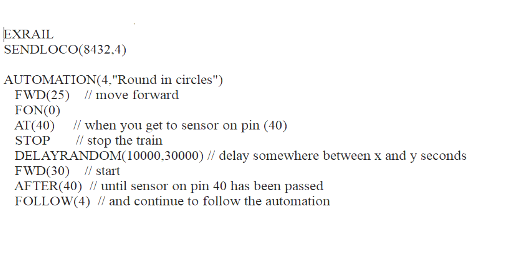The first line tells EX-Rail that commands are following. The next line, SENDLOCO, takes two parameters: the loco number and the sequence you want. Here I'm using loco 8432 and automation number four, 'Round in Circles.' This can be found in the examples and identifies the loco involved and what automation to use.